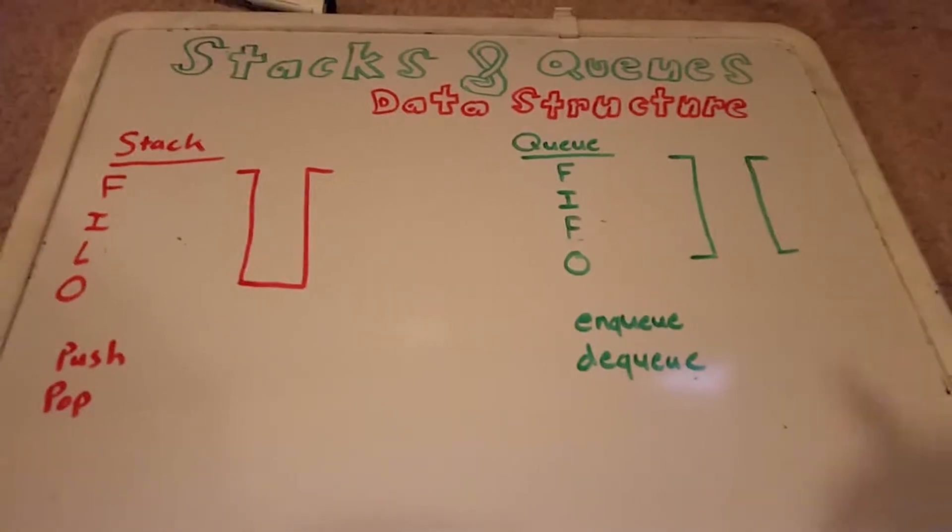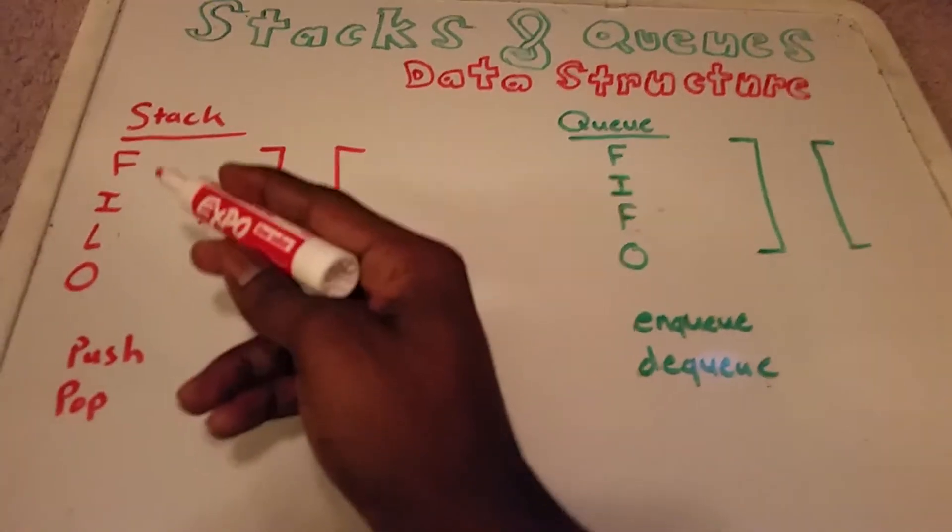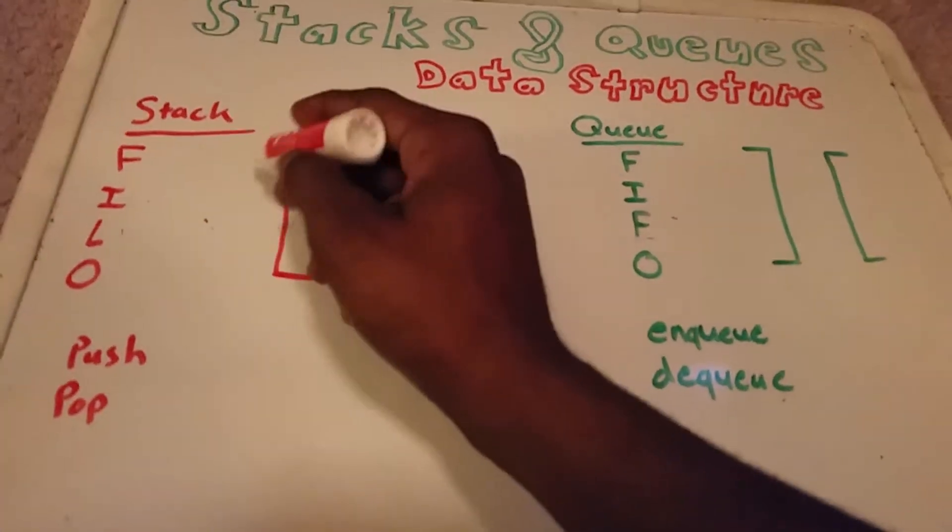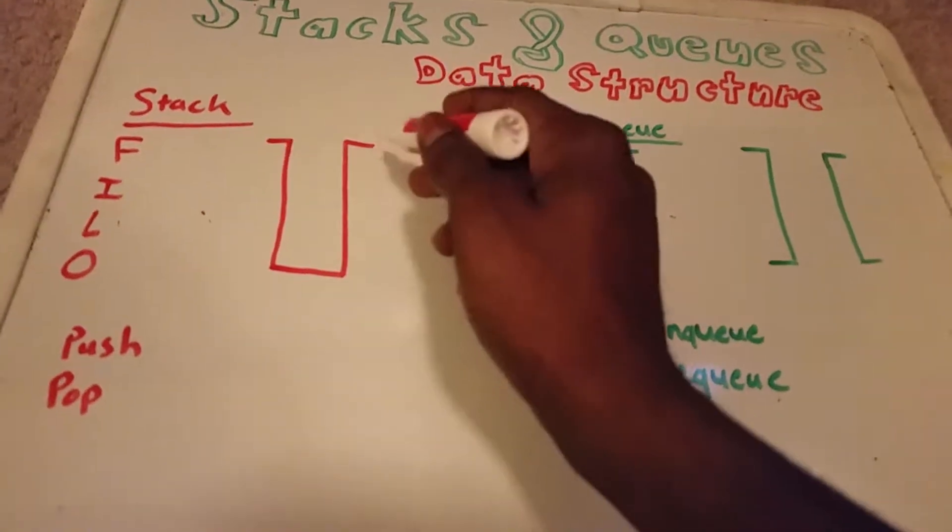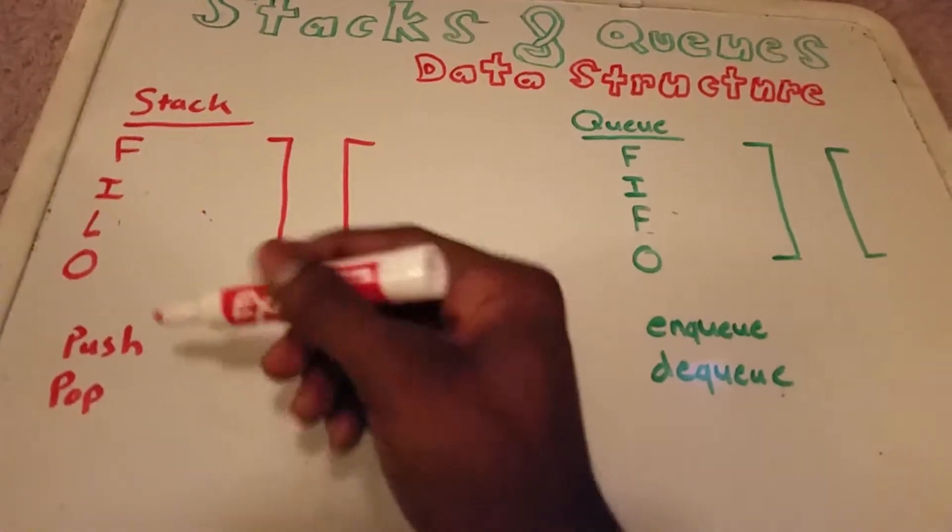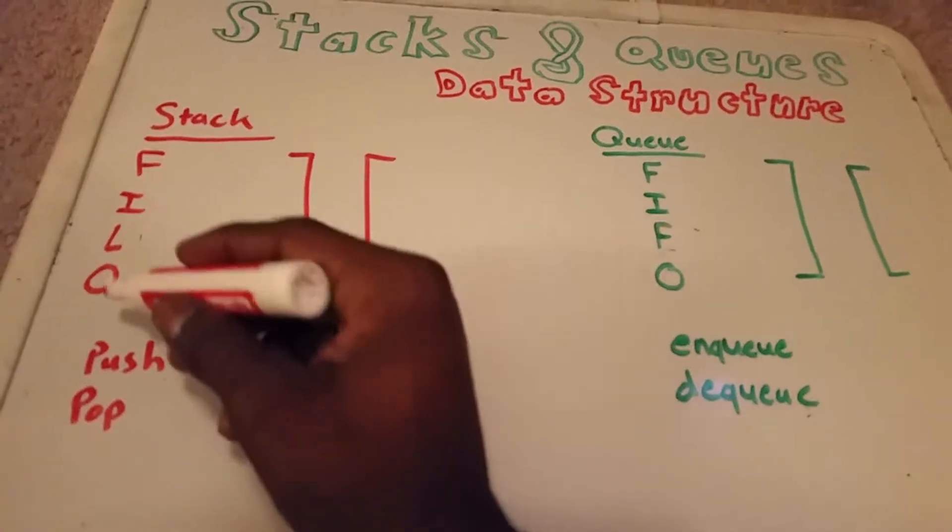Stacks and queues are a type of data structure. Here we have a stack to the left, and it can be represented by this figure here. And we have the acronym F-I-L-O,